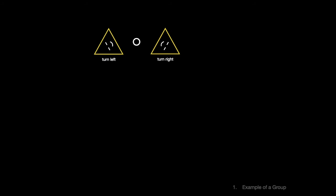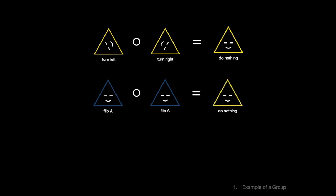Any two actions can be composed. Left turn and right turn undo each other. They're opposites, or more formally, inverses. To use group theoretic terminology, we would say turn left compose turn right equals do nothing. Since flip A undoes itself, it's its own inverse. Doing it twice is the same as doing nothing. Doing nothing has a more formal name as well. It's the identity.